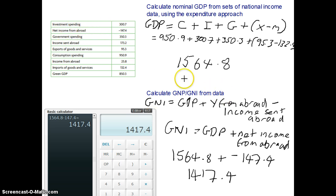find our income from abroad, 25.8, and then we'll minus the income sent abroad, 173.2. And that would give us 147.4, which is what we had there.